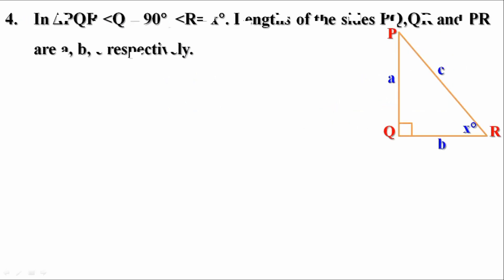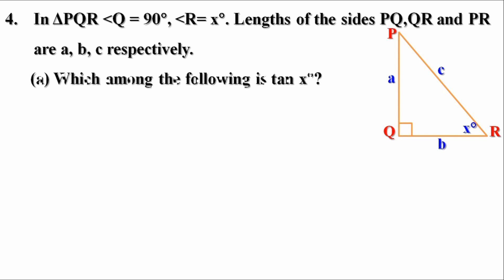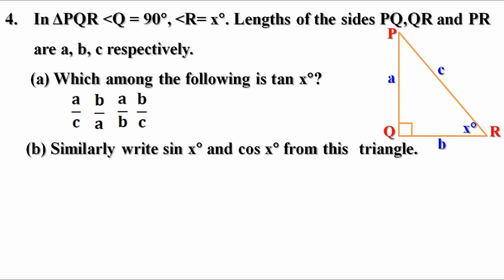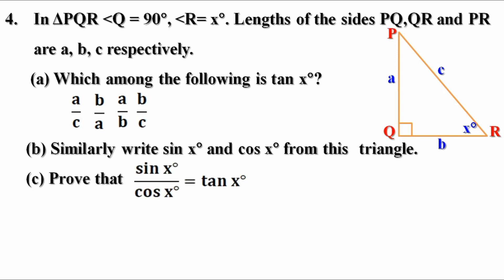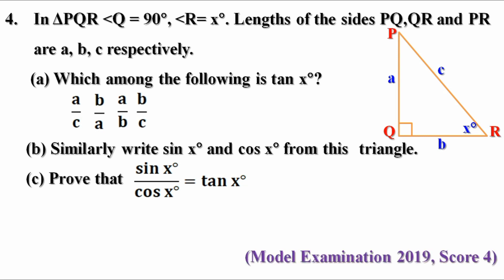Fourth question. In triangle PQR, angle Q equal to 90 degree, angle R equal to x degree. Lengths of sides PQ, QR and PR are A, B, C respectively. Which among the following is tan x degree? A by C, B by A, A by B, B by C. Similarly write sin x and cos x from this triangle. Prove that sin x by cos x equal to tan x. It is a question from model examination 2019 and the score is 4.